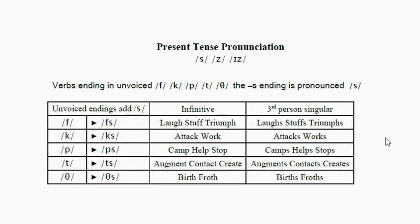Hi, and today we're going to take a look at present tense pronunciation, and we're going to look at some of the phonetic symbols like the S sound, the Z sound, and the IS sound. So the first group that you have are called unvoiced consonants.